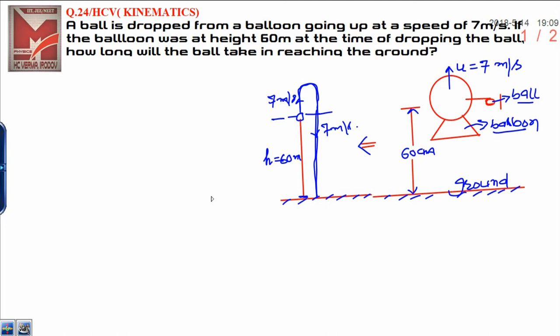Dear student, this is question number 24 from HC Verma chapter number 3, Kinematics. In this question, a ball is dropped from a balloon going up at a speed of 7 meters per second. If the balloon was at a height of 60 meters at the time of dropping the ball, how long will the ball take in reaching the ground?